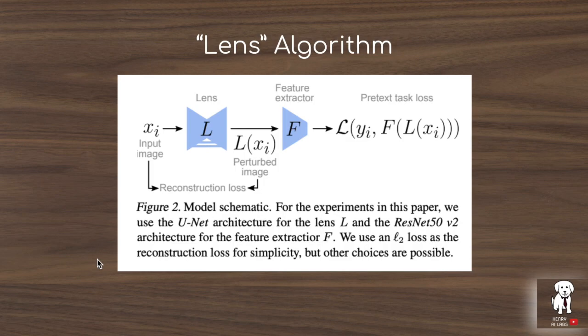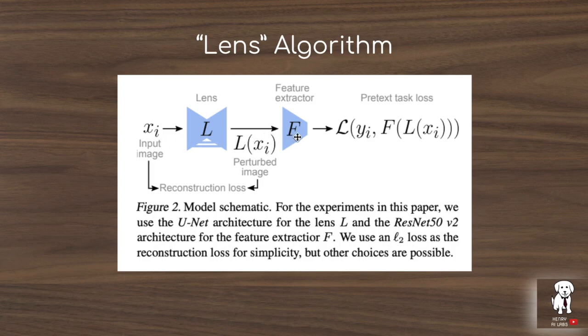This diagram shows the framework of the lens algorithm for automatic shortcut removal for self-supervised learning. The framework uses adversarial training — like generative adversarial networks — where two neural networks compete against each other. The lens network takes the input image and tries to produce a corrupted image such that the rotation prediction network fails on the task. As the lens corrupts these images, the feature extractor can no longer rely on low-level features to predict how much the image has been rotated.